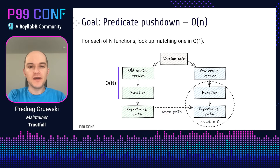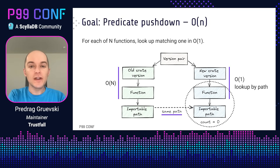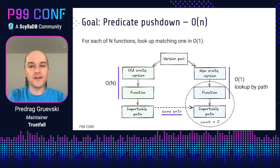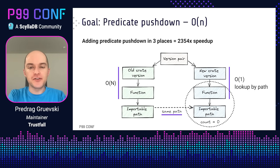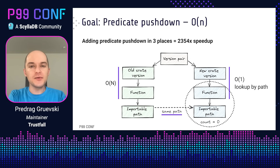Our goal here is to implement an optimization called predicate pushdown, which looks just like adding a database index. Given that we're looking for a specific function by path, we can look up the corresponding function in the new version in O(1) using an index. We're going to do this N times across each of the functions in the old version, so the total runtime here would be O(N). The entire 2300× speedup is just three instances of predicate pushdown across the various queries in Cargo Semverchecks. So if all we're doing is adding some indexes, what's the challenge here?